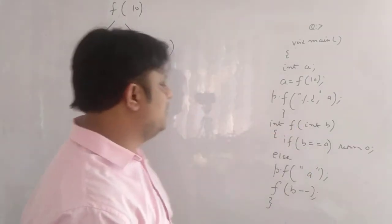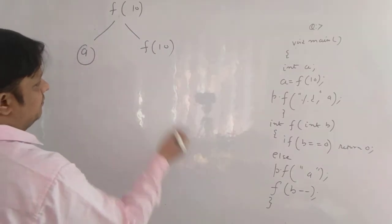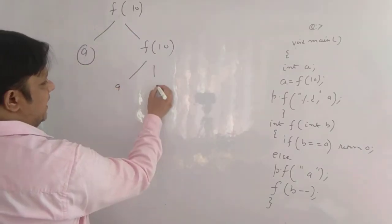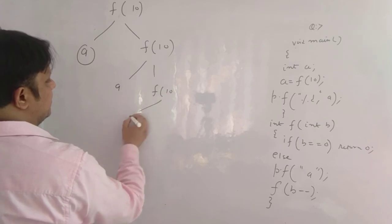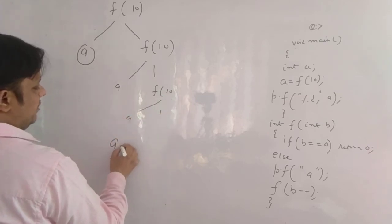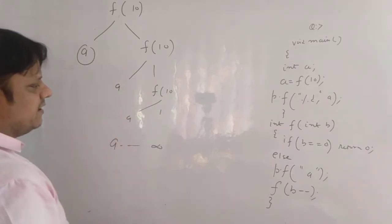So again when you call this function, b becomes 10. So again it will print a. And this is again f(10). And this continues. So you are printing, you get 'a' infinite number of times.